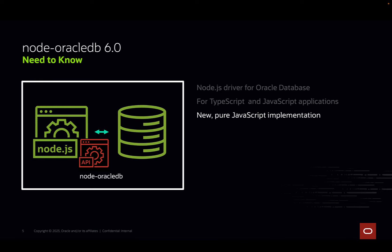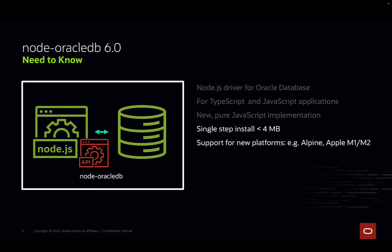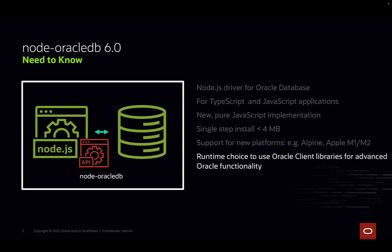This latest Node Oracle DB release introduces a new pure JavaScript implementation. This makes installation quick, small, and easy. Being JavaScript allows it to install on platforms wherever Node.js is available. In previous releases of Node Oracle DB, the Oracle client libraries were mandatory, but now they are optional.